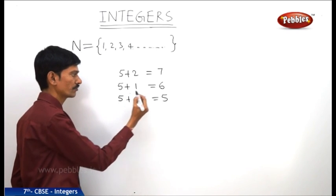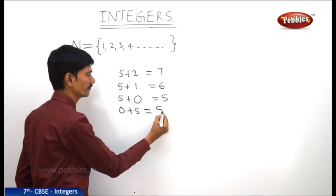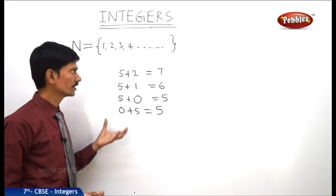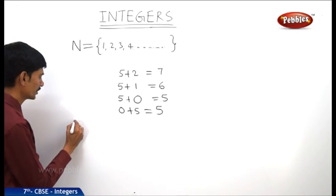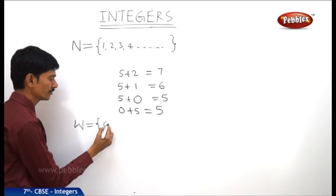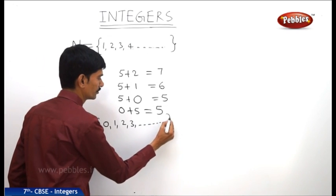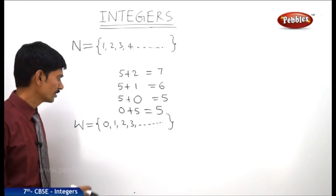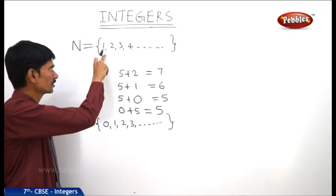That 'nothing' is denoted by 0. So 5 plus 0 equals 5, or 0 plus 5 equals 5. If we include 0 to the set of natural numbers, we get another set of numbers called whole numbers, denoted by W: 0, 1, 2, 3 and so on. The natural numbers together with 0 give the whole numbers. The smallest whole number is 0 and the smallest natural number is 1.